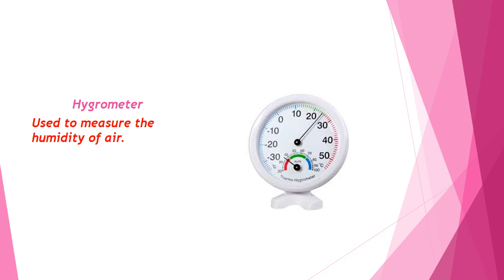Hygrometer. Hygrometer is an instrument used to measure the amount of water vapor in air, in soil, or in confined spaces. Humidity measurement instruments usually rely on measurement of some other quantities, such as temperature, pressure, mass, or a mechanical or electrical change in substance as moisture is absorbed.